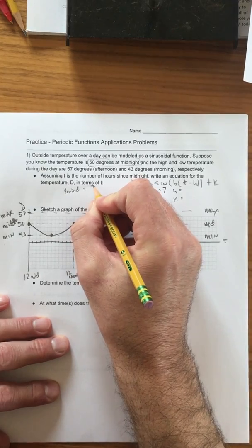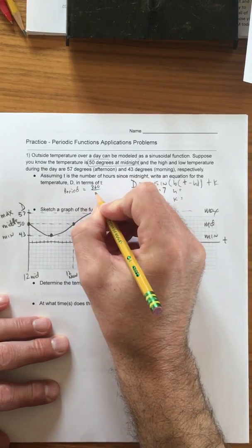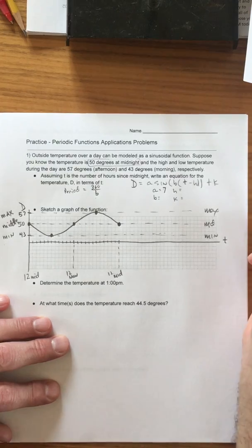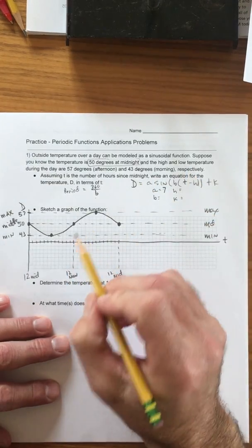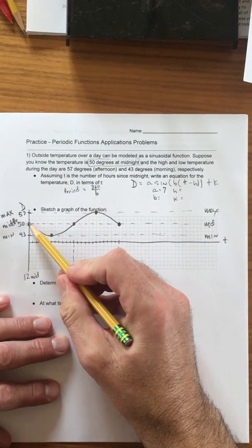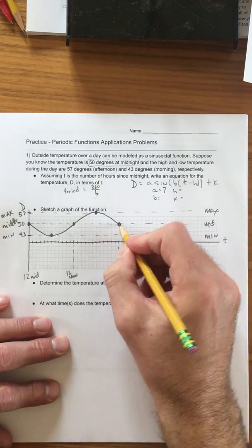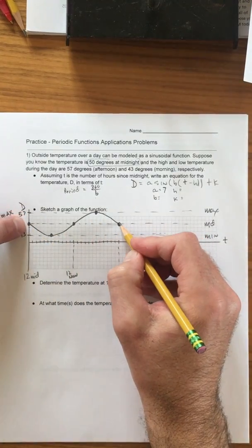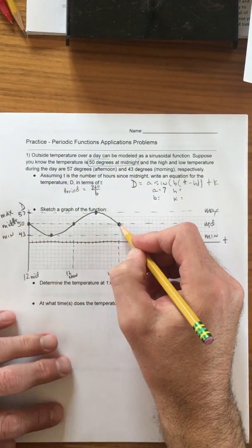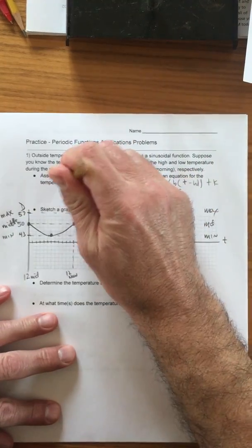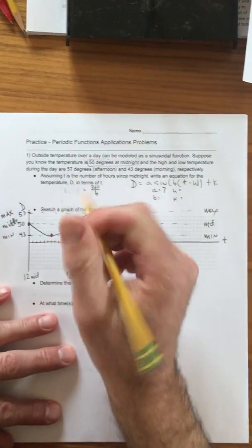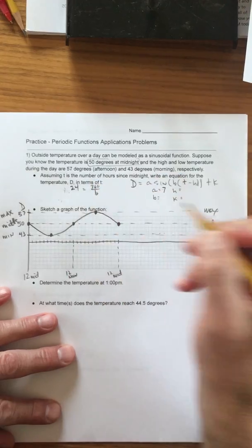Now we know that the period equals, let's do this in degrees, 360 degrees over the B value. Now the assumption that we made is that if it's 50 at midnight, it'll be 50 at midnight again. And so that's the period from midnight to midnight, which is 24 hours.